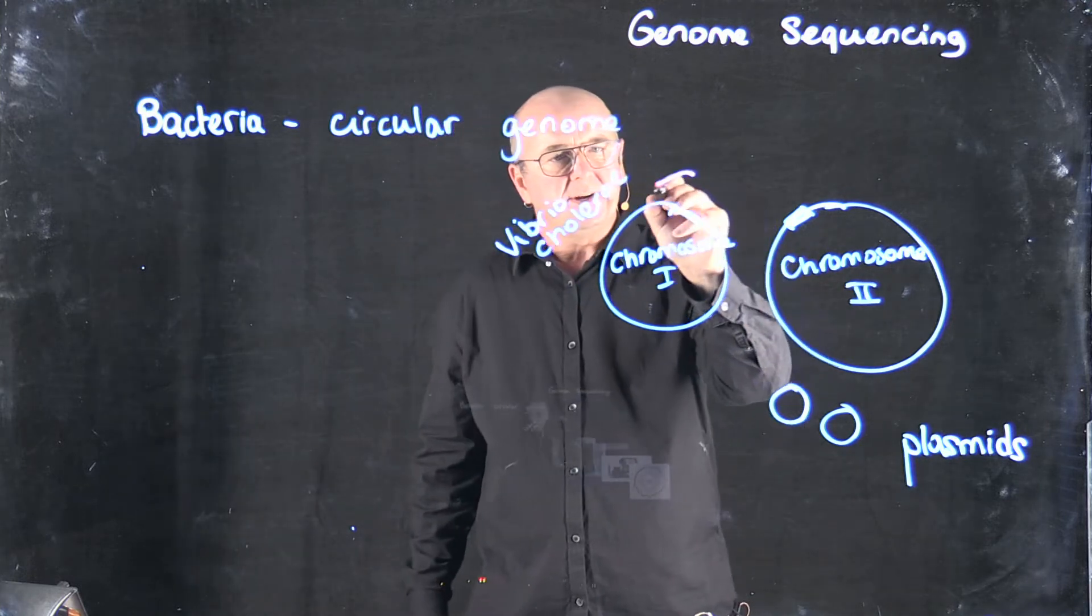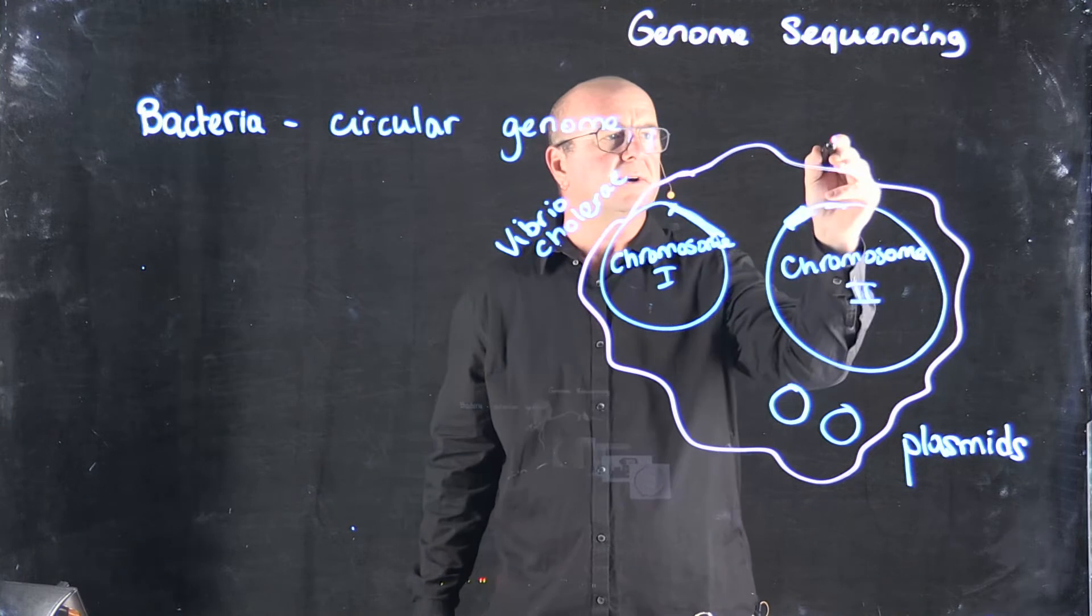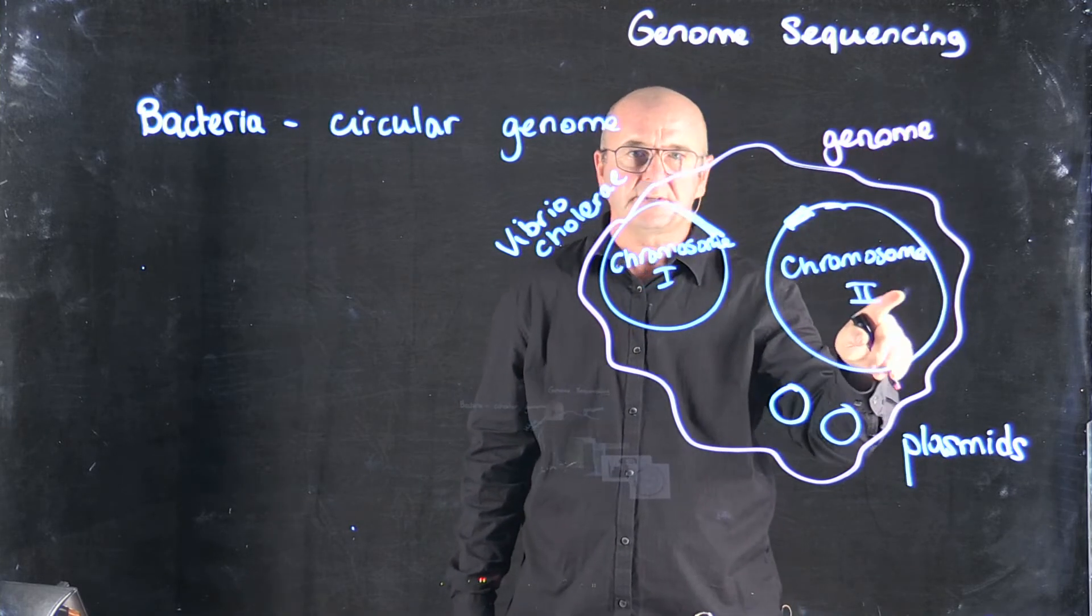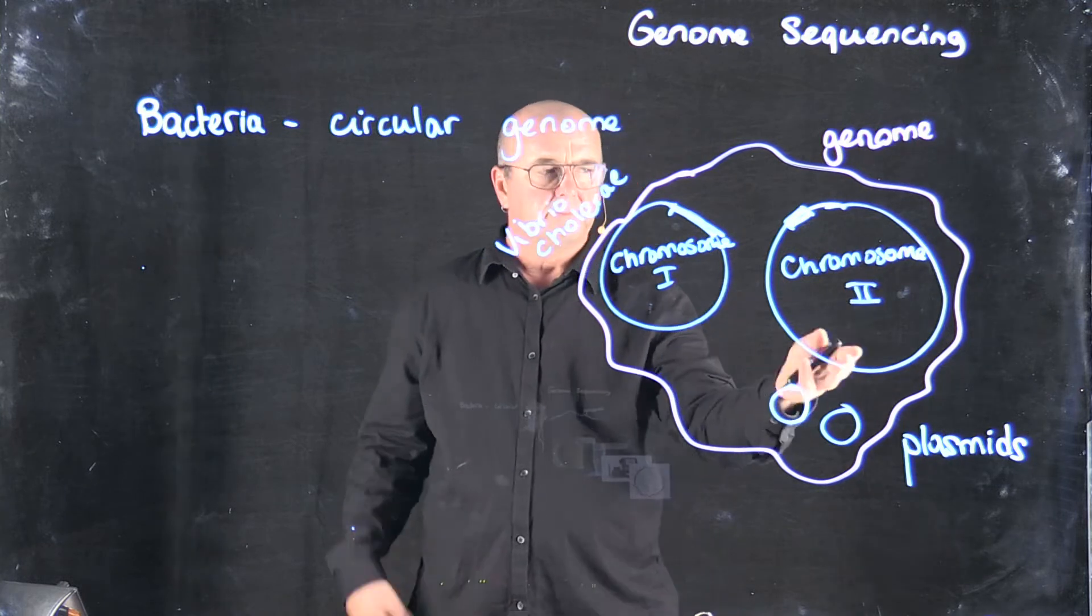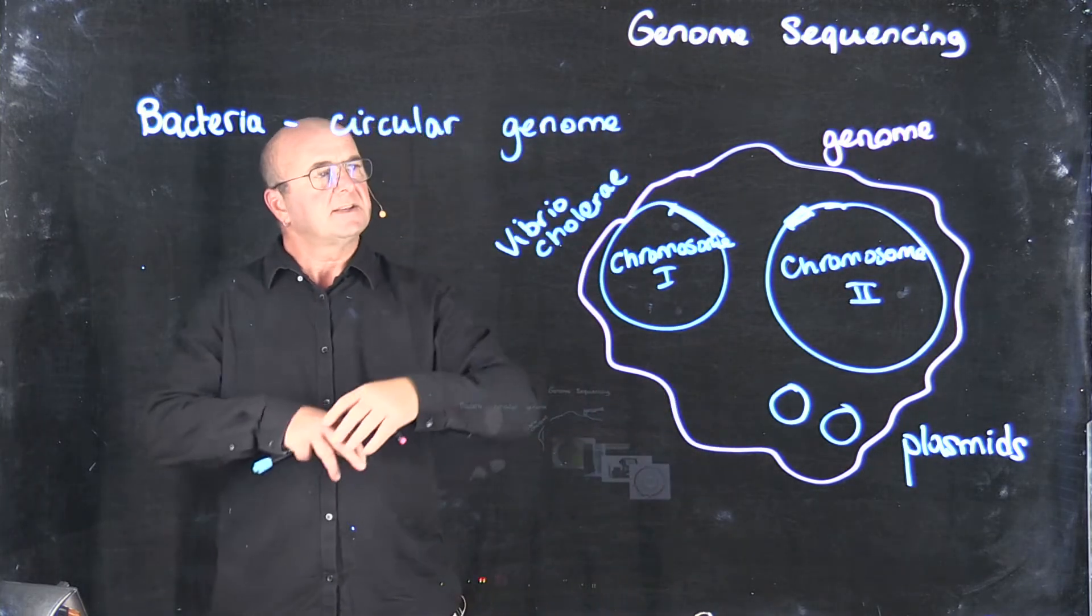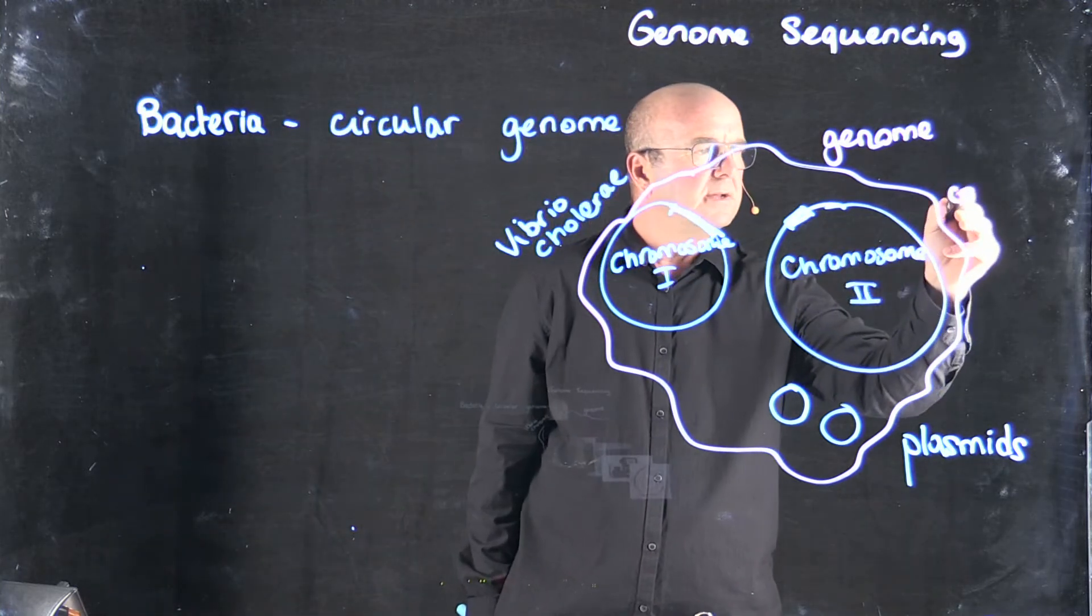When we talk about the genome, what we're actually talking about is the entire complement of chromosomes - maybe one chromosome, maybe more than one chromosome - and plasmids. We consider that to be the whole genome for a particular cell.